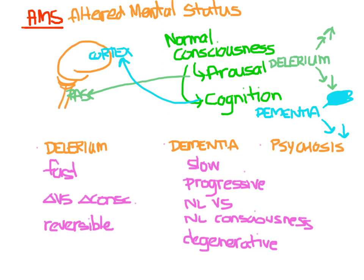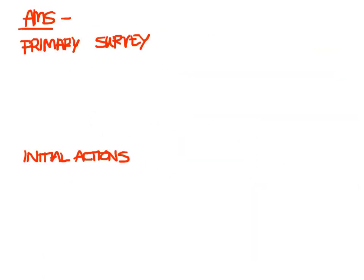Psychosis is something that can present similar to delirium, where patients are not acting properly. It could be sudden onset, usually their vital signs are going to be somewhat normal, their level of consciousness is going to be normal, and it may or may not be reversible. However, this is a diagnosis of exclusion. You want to rule out all organic causes of altered mental status before blaming it on a psychiatric diagnosis. This is part of what we do when medically clearing someone for a psychiatric admission — looking for all potential organic causes of delirium presenting like psychosis.